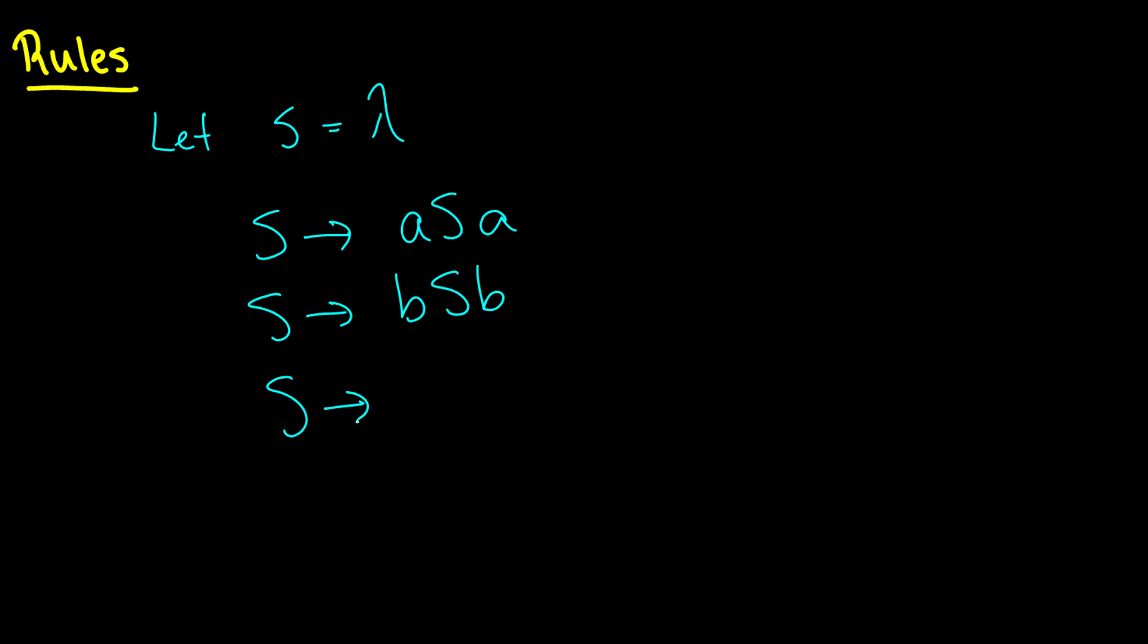So these are sort of recursive things. So if we start with lambda, we can choose one of these to go to. So let's say we have lambda, and we'll call this rule one, rule two, rule three. What we'll do is we'll use rule one, and we're going to get aa. Now what we can do is we can use rule two, and we can get baab. Let's go a little bit crazy, and now we'll use rule three. So we'll get aabaab. And you can specify your language with these rules.